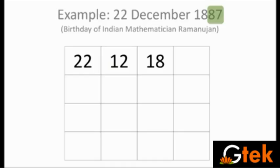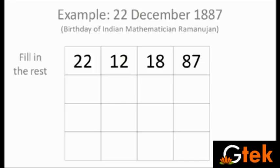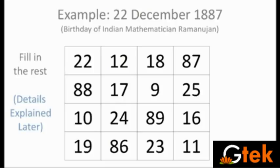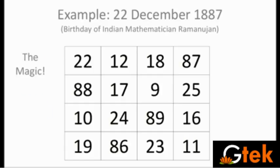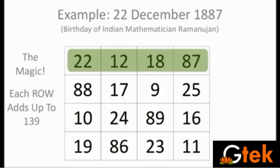Ramanujan arranged the numbers from his birthday: 22 December 1887. He arranged the numbers by adding or subtracting them to make different patterns with the squares. He gave this square with four rows and four columns. You may get different patterns, and summing them all up gives the same value.